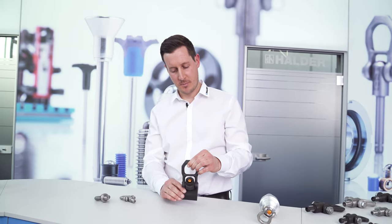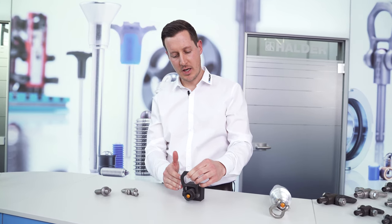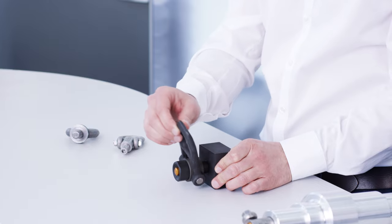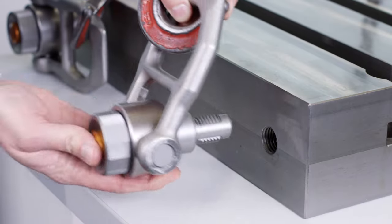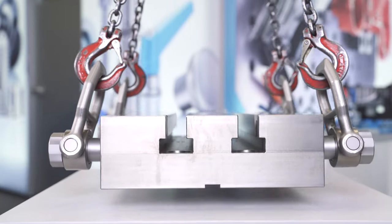If the force is applied at an angle, the variant with a rotating shackle is used. Thanks to the freely rotatable bearing of the shackle, the threaded lifting pin can always be aligned in the direction of the force. Consequently, this variant is also suitable for lifting loads with multiple strand slings.